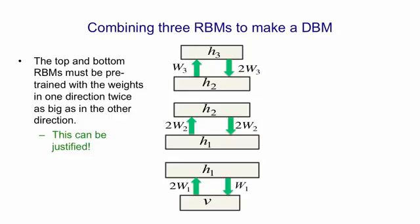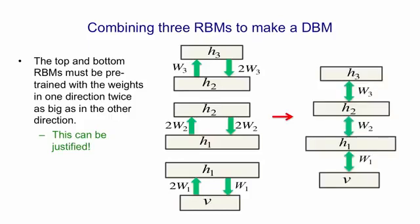After having trained these three restricted Boltzmann machines, we can combine them to make a composite model. For the restricted Boltzmann machine in the middle, we've simply halved its weights — that's why they were 2W2 to begin with. For the one at the bottom, we've halved the up-going weights but kept the down-going weights the same, and for the one at the top, we've halved the down-going weights and kept the up-going weights the same. The question is: why do we do this funny business of halving the weights?